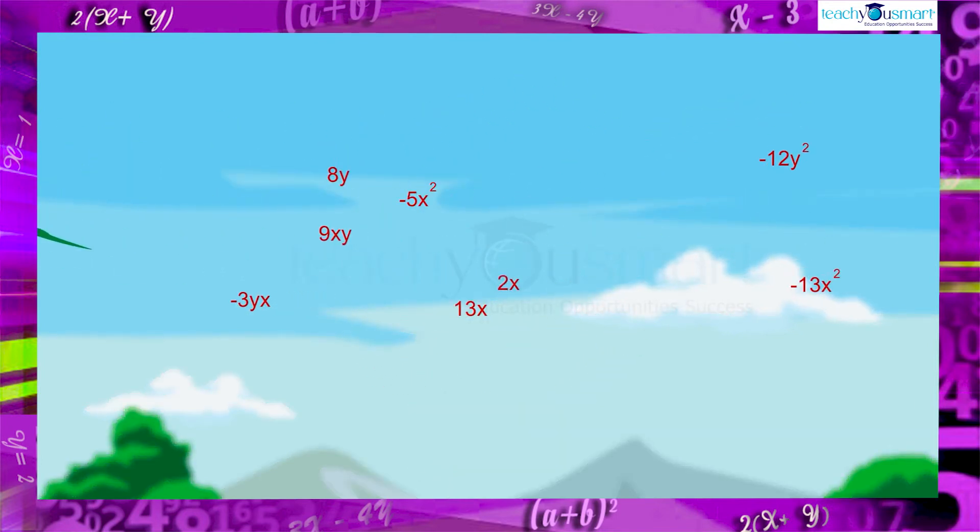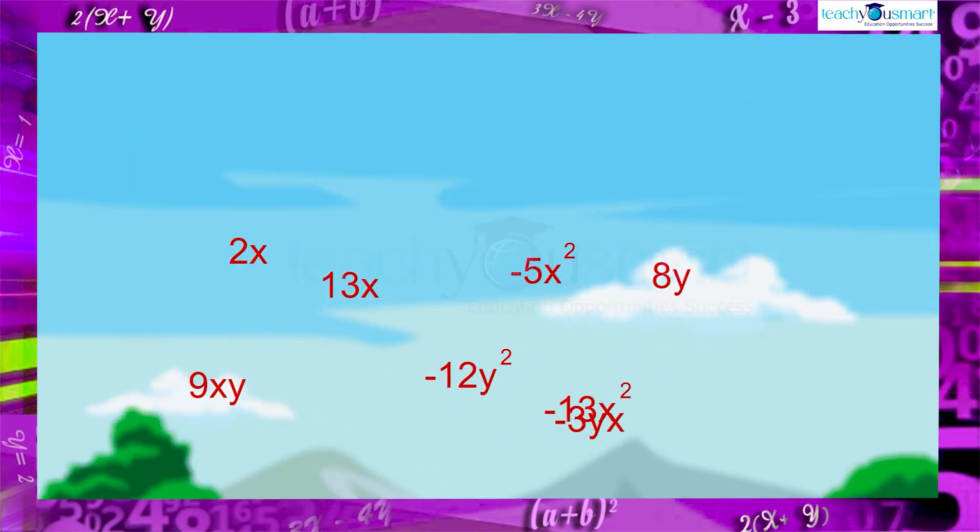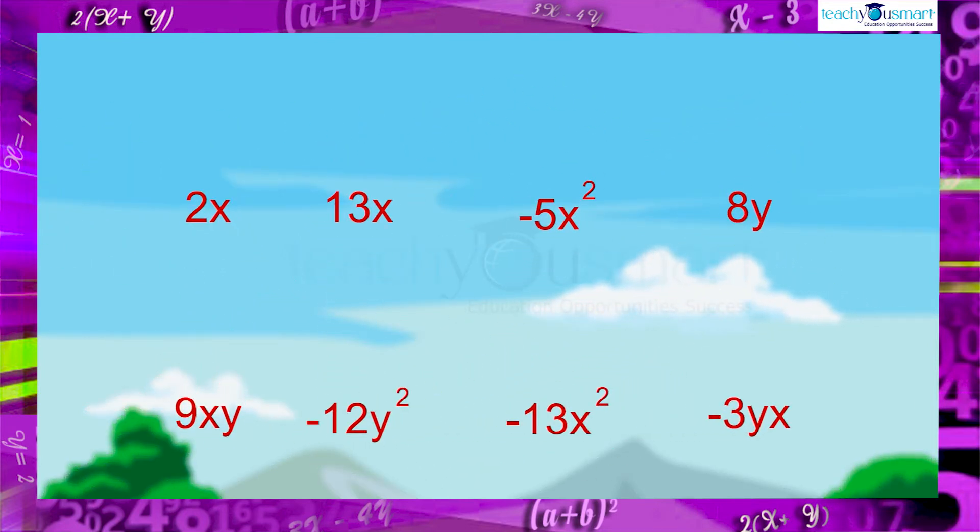Let's see some terms here: 2x, 13x, minus 5x square, 8y, 9xy, minus 12y square, minus 13x square, minus 3yx. Can you classify these terms as having the same variable and the same power? Yes, of course.